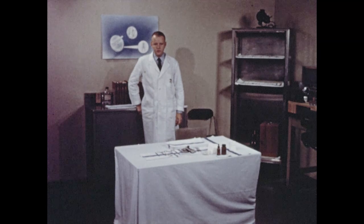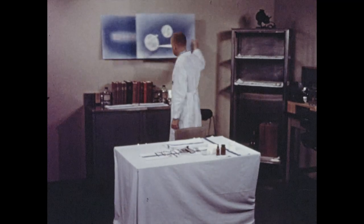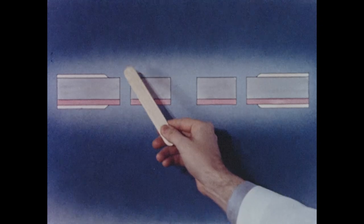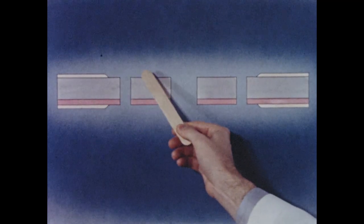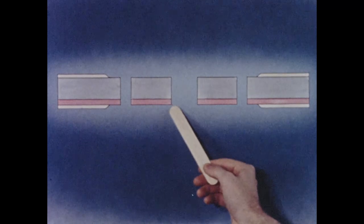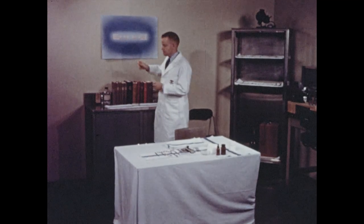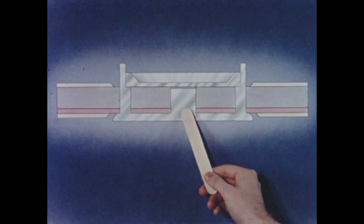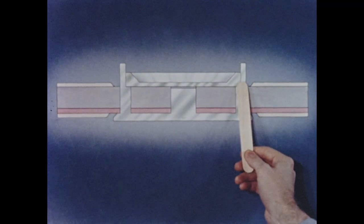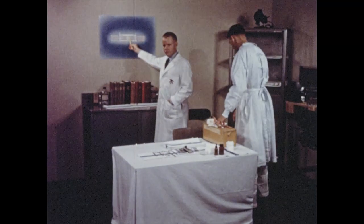The surgical technique by which the plastic chamber is installed in the ear is relatively simple. Holes are punched completely through the ear. Next, the skin is carefully dissected and removed from the inner and outer surface of the ear in the area into which the chamber will be inserted. It is imperative that the cartilage and blood vessels be left intact. Finally, the chamber is installed and cemented in position. This is the area into which tissues will grow and later be used for microscopic examination.